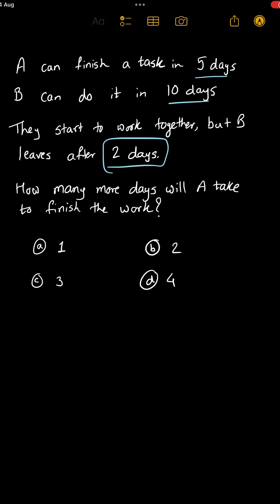In such kind of questions, always try to convert the work into work done per day. So if A can finish it in 5 days, that means in 1 day he can do 1/5 which is 20% work. Similarly, B can do 1/10 which is 10% work in a single day.